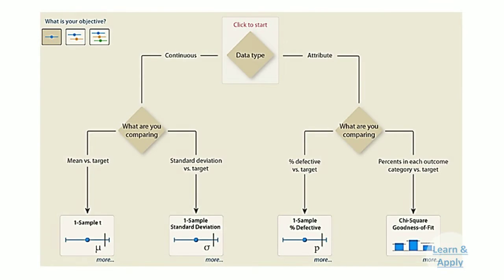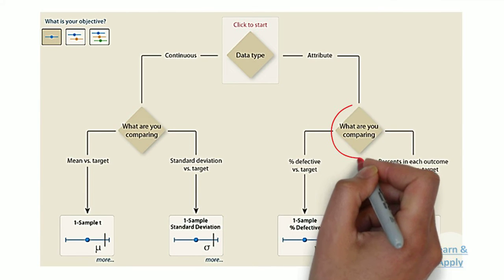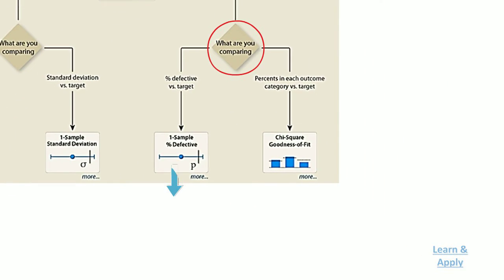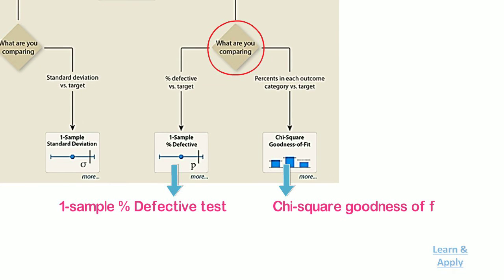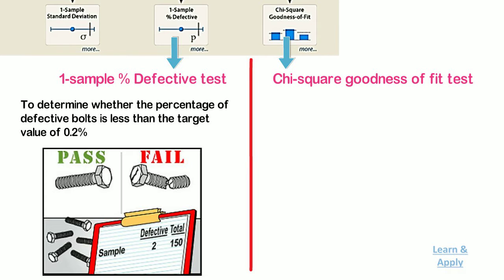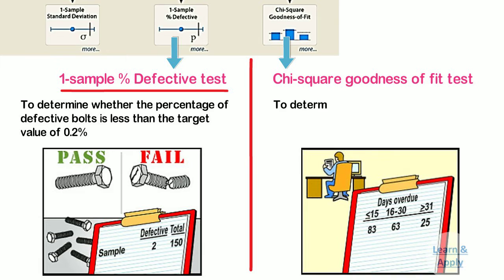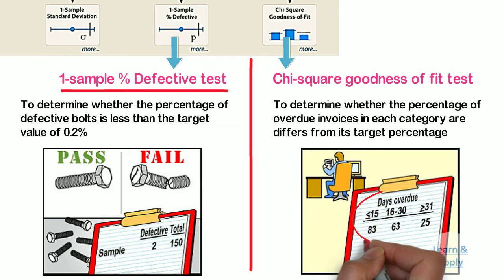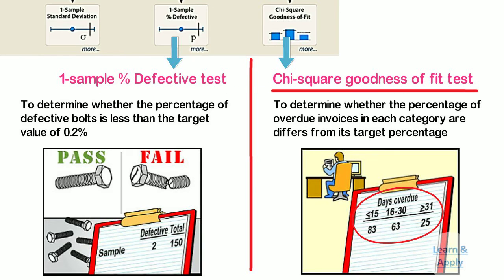If the data is attribute, the second selection criteria is again: what are you comparing? If you are comparing percentage defectives versus a target, use the one-sample % defective test. If you want to compare percentage in each outcome category versus a target, use the chi-square goodness of fit test. For example, if a quality engineer wants to determine whether the percentage of defective bolts is less than the target value of 0.2%, then use the one-sample % defective test. Whereas if an analyst wants to determine whether the percentage of overdue invoices in each category — such as 15 days or less, 16 to 30 days, and more than 30 days — differs from its target percentage, then use the chi-square goodness of fit test.